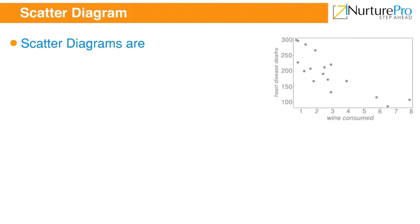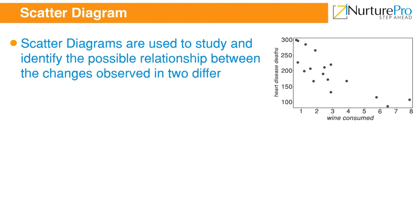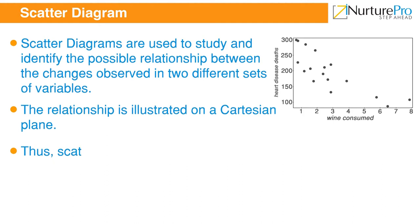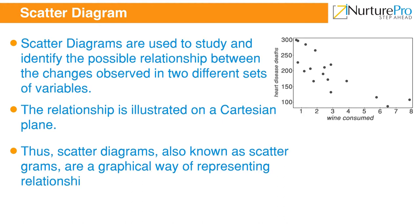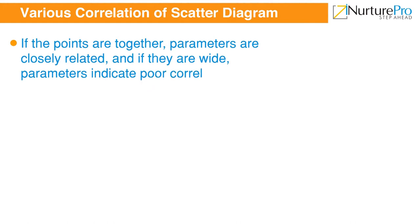Scatter diagrams are used to study and identify the possible relationship between the changes observed in two different sets of variables. The relationship is illustrated on a Cartesian plane. Scatter diagrams, also known as scattergrams, are a graphical way of representing the relationship between two variables. If the points are close together, parameters are closely related; if they are wide apart, parameters indicate poor correlation.